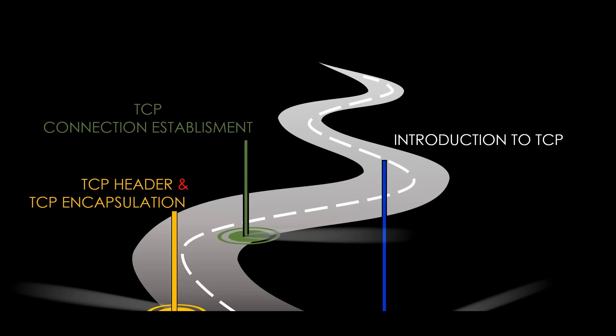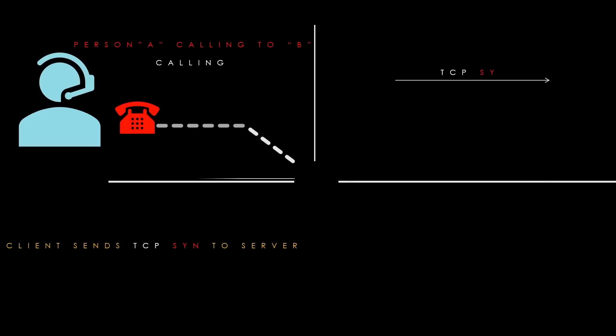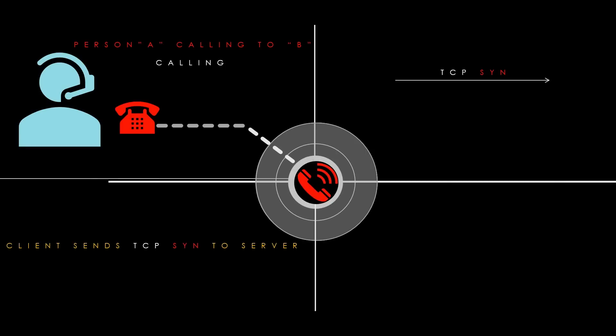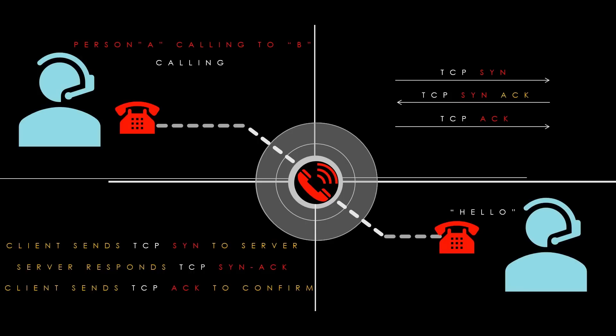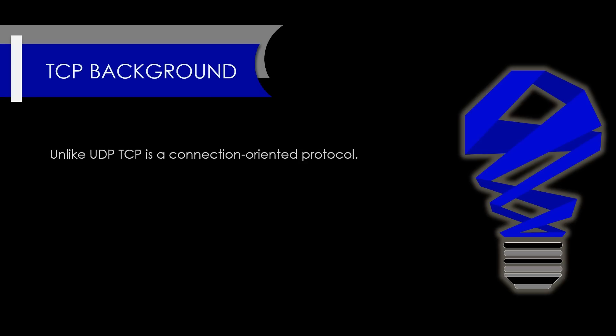Today's lecture is TCP connection establishment. Imagine person A wants to call person B. Person A dials person B and waits for the phone to ring — this is like TCP sending a SYN packet to the server to initiate the connection. Person B hears the phone ringing and answers it — this is like the server sending a SYNACK packet to acknowledge and synchronize the connection. Person A hears the phone being answered and says hello — this is the connection being established and data being transferred.